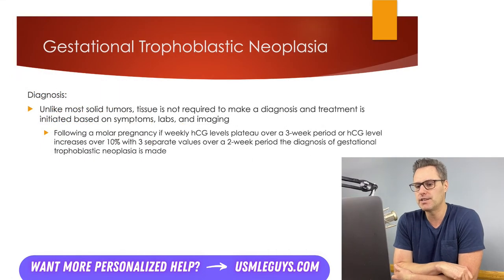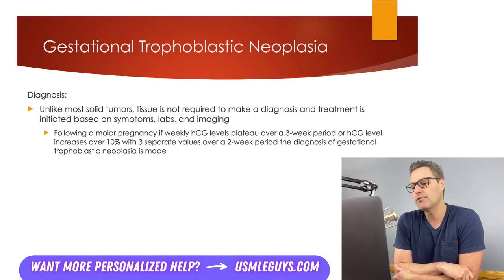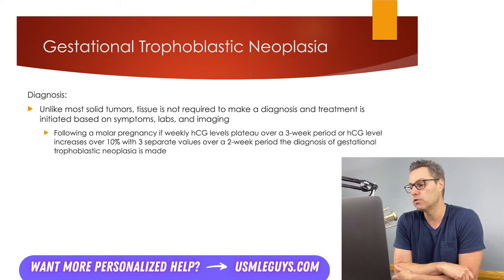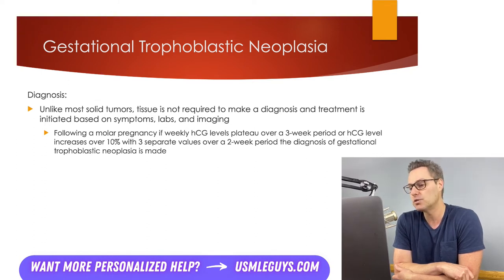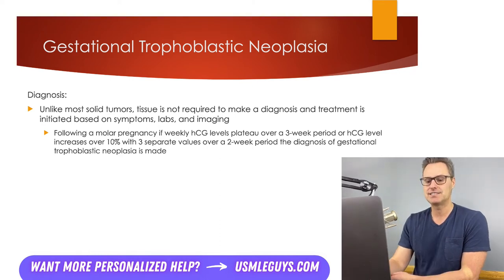Unlike most solid tumors, tissue is not actually required to make a diagnosis of GTN — treatment is initiated based on symptoms, labs, and imaging. After a patient has a molar pregnancy, they're monitored with weekly HCG levels. If levels plateau over a three-week period, or HCG levels increase over 10% with three separate values over a two-week period, the diagnosis of gestational trophoblastic neoplasia is made. This is the only diagnosis that can produce these HCG findings, so a tissue biopsy simply isn't necessary.